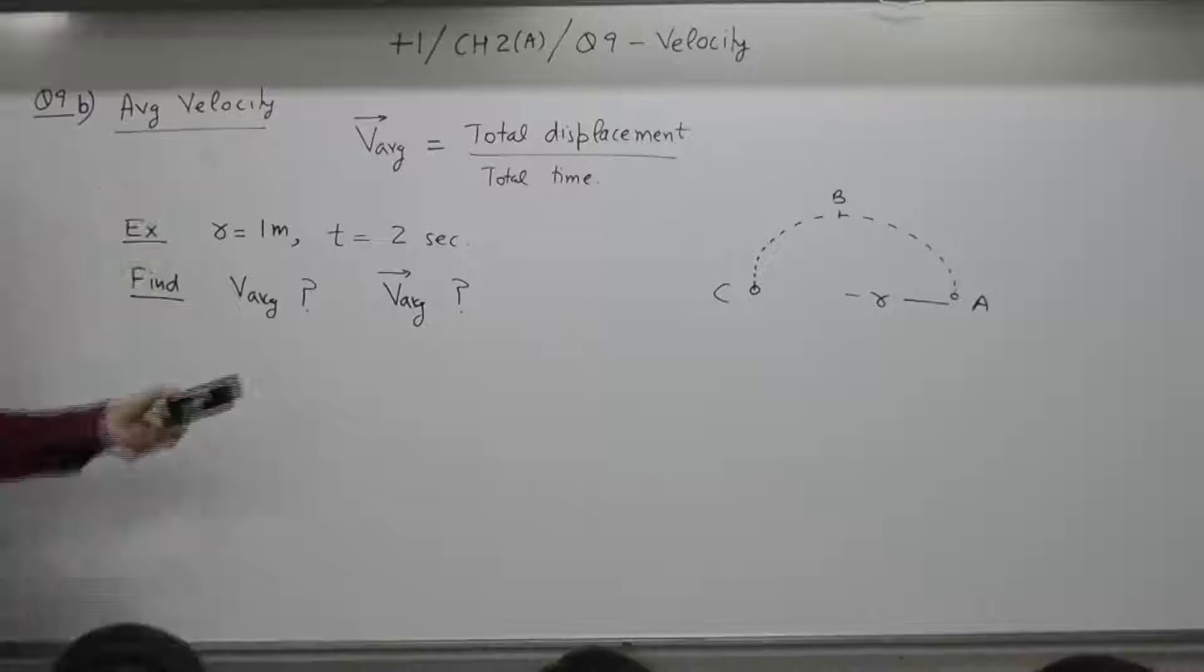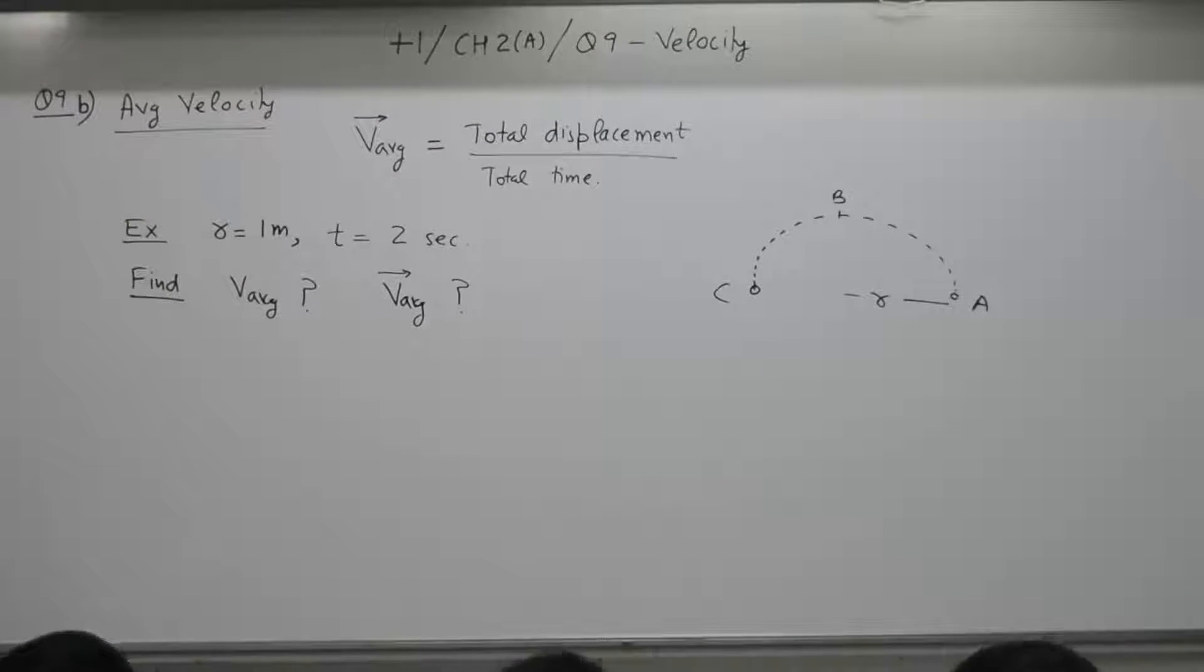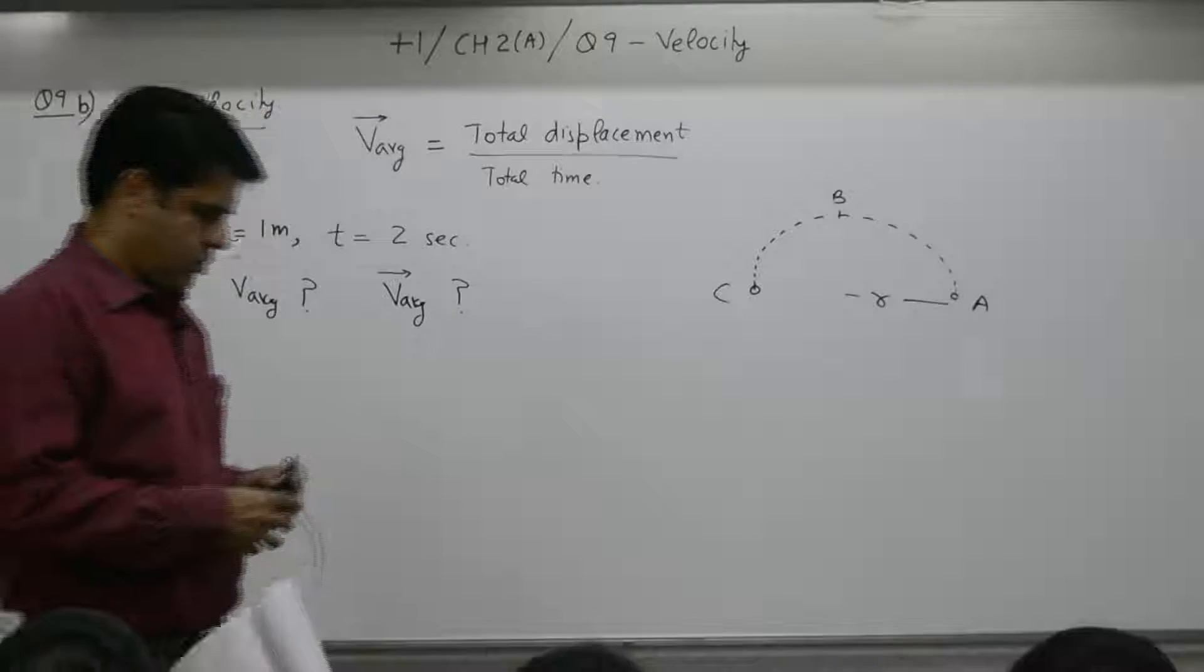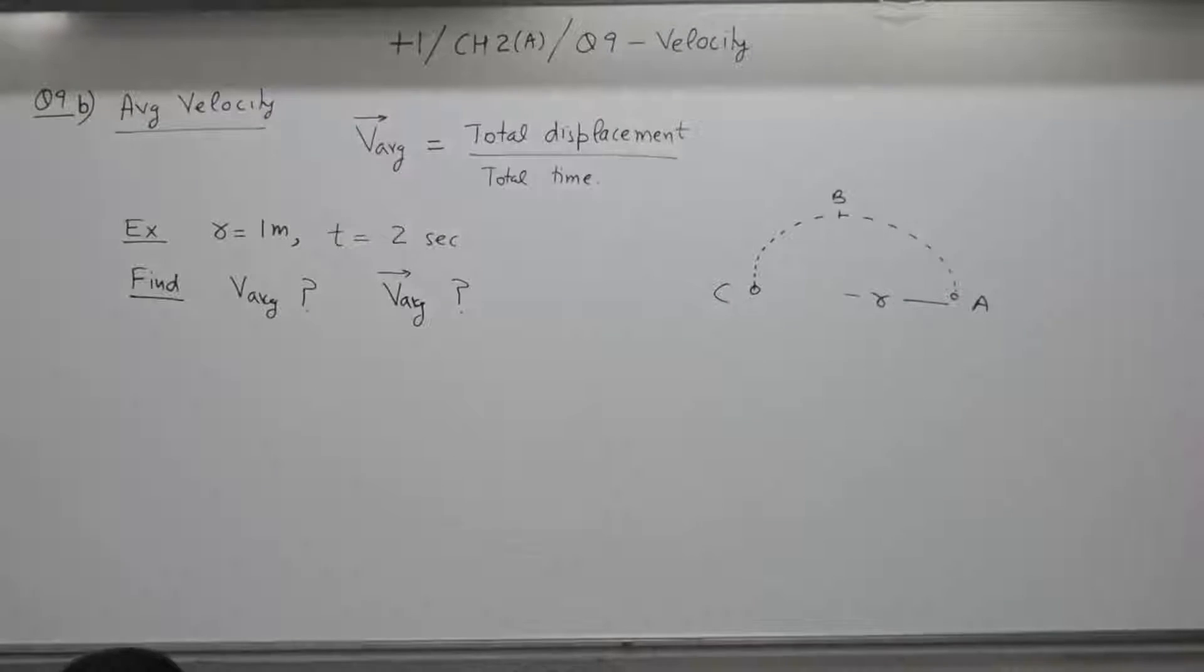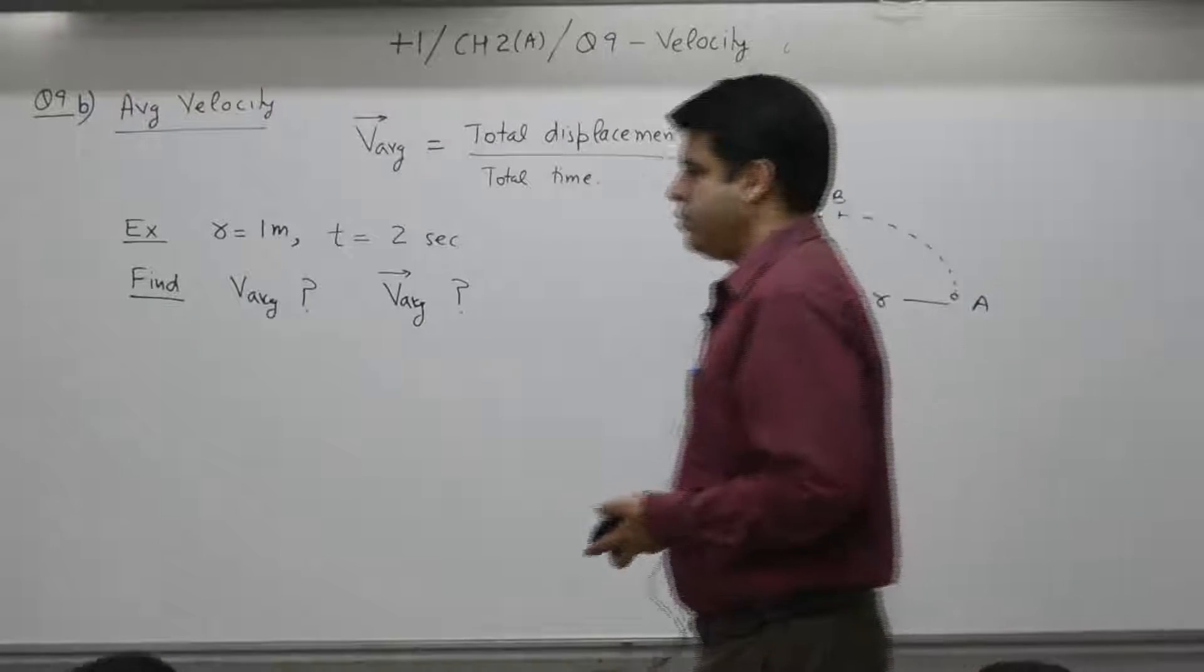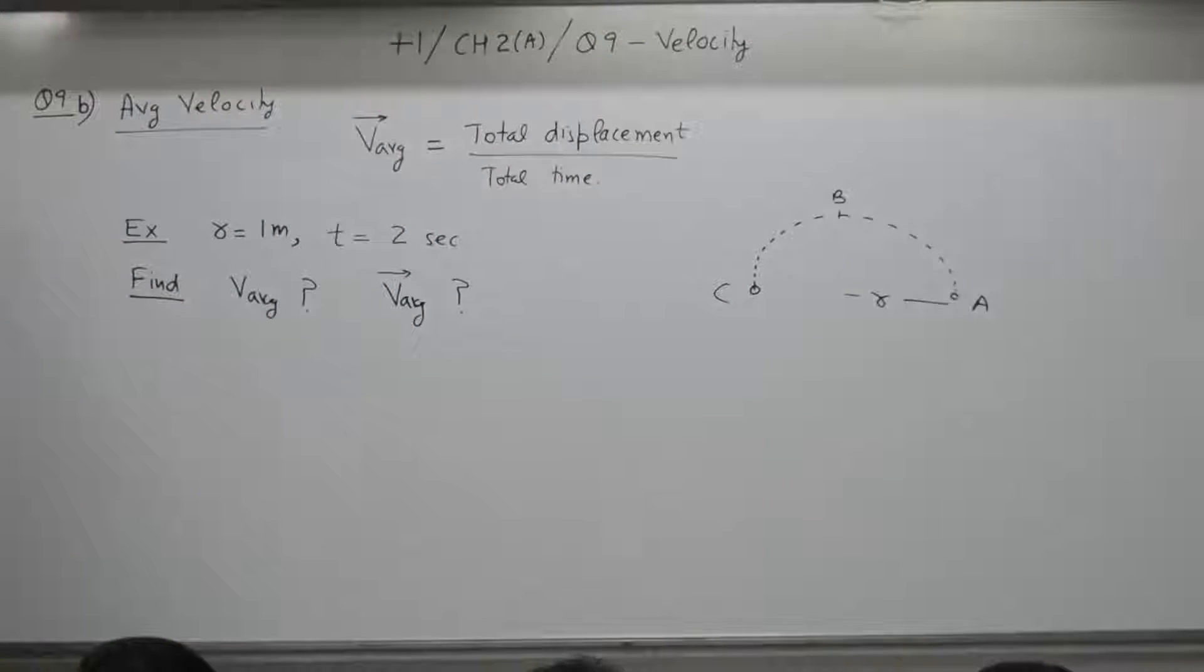2 minutes to pen down this. And then 2 minutes more to try. Question number 9B part, you have to find out average speed and average velocity.